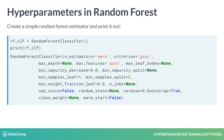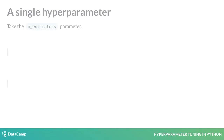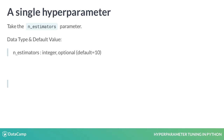But what do they all mean? For this we need to turn to the scikit-learn documentation. Let us take the example of the n_estimators hyperparameter. We can see in the documentation that it tells us the data type, the default value, and also provides a definition of what it means.